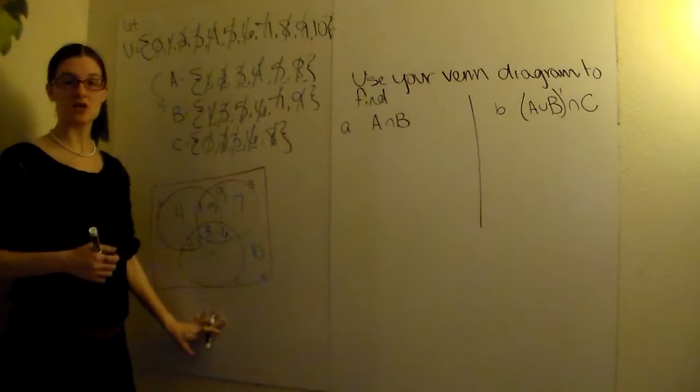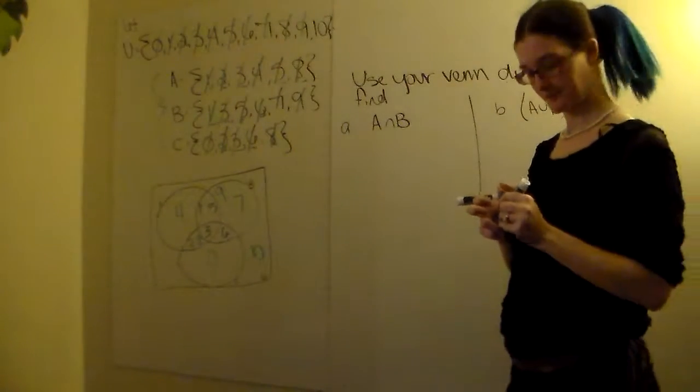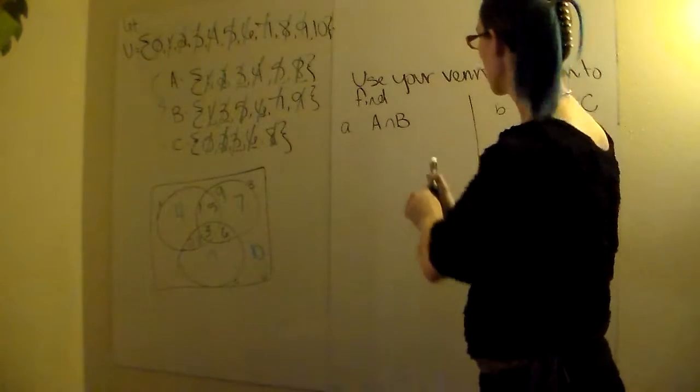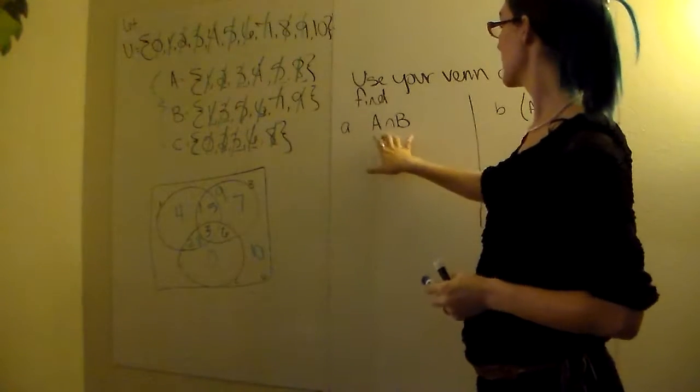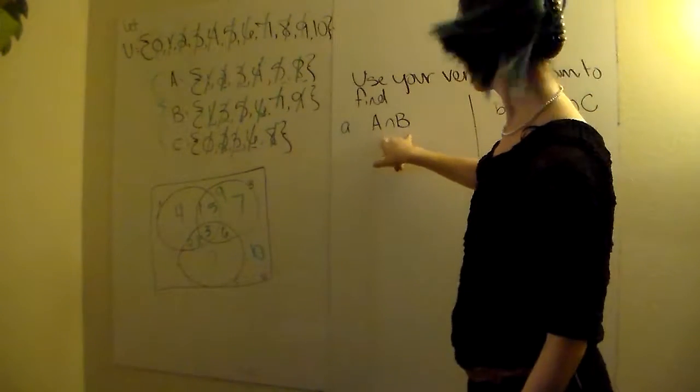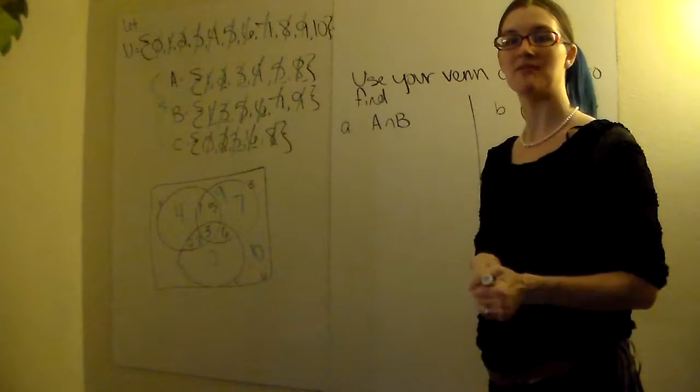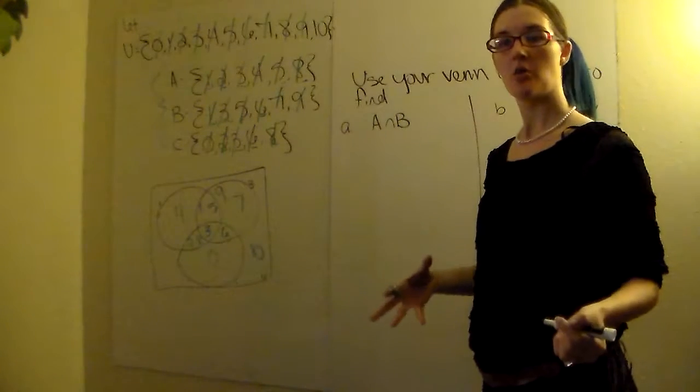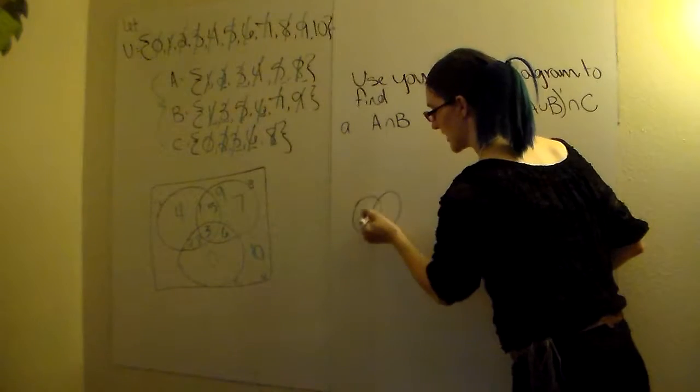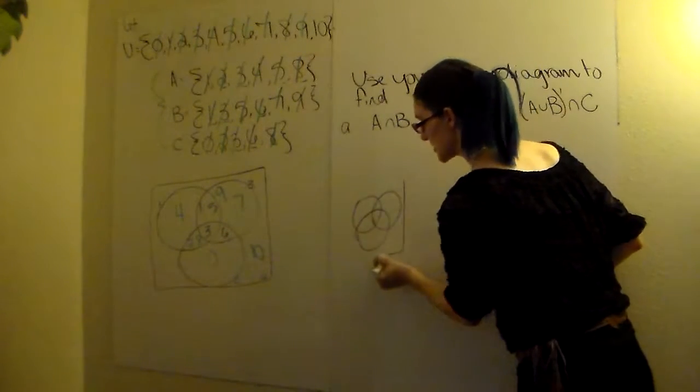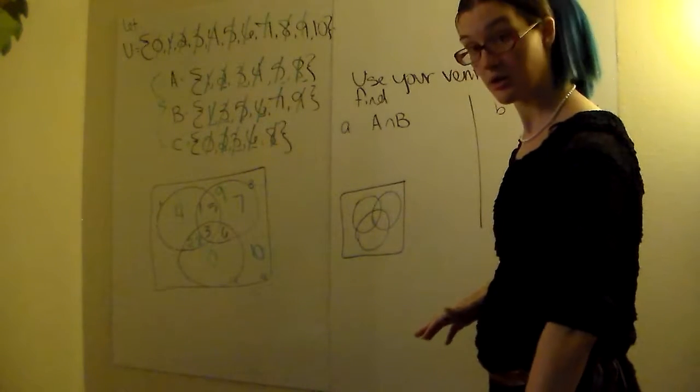Now we have your entire Venn diagram completed. And we can go to answering the questions over here. So we're going to start off with A intersect B. They want what terms are in A intersect B. And a lot of people will mess this up. So I'm going to show you a way to kind of help you to visualize what's going on, where your answer is supposed to be. So I would start by drawing a picture of your Venn diagrams. You don't have to put the numbers in there. We're just going to shade it to see what area we are looking for.